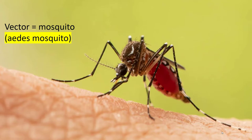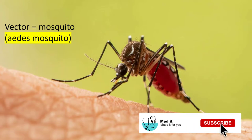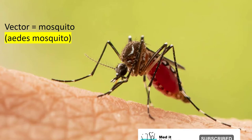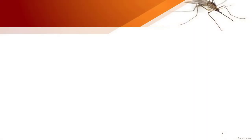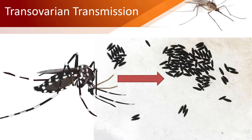This is exactly why cases of dengue rise at that time of year in endemic areas. There is also trans-ovarian transmission, which means transmission occurs from the mother mosquito to the eggs she has laid while in oviposition, or egg-laying position.